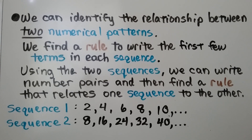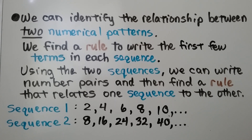We can identify the relationship between two numerical patterns. We find a rule to write the first few terms in each sequence. Using the two sequences, we can write number pairs and then find a rule that relates one sequence to the other.